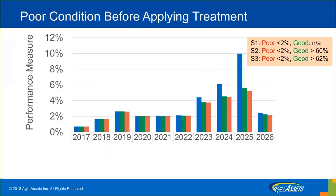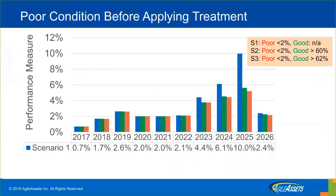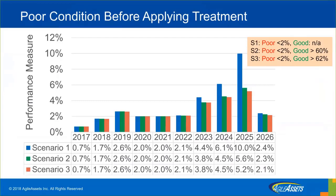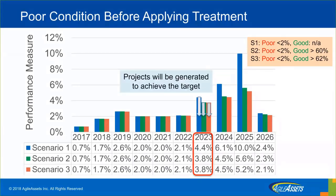This is the result for percentage of poor for each year across all three scenarios. The system works such that if the percentage of poor for a scenario goes beyond the constraint, the system generates optimal projects to bring that condition back within the constraint. For example, in 2023, optimal projects will be generated to achieve the 2% target for all scenarios.